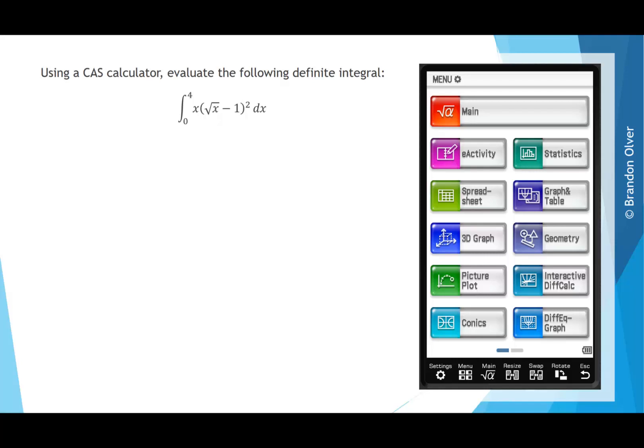Using a CAS calculator, evaluate the following definite integral, which is the integral between zero and four of the function x times the square root of x minus one, all squared. And we're integrating that all with respect to x, which is the dx at the end of this line.